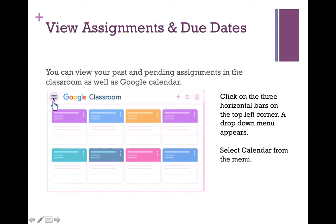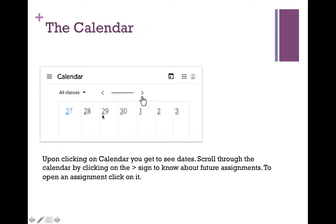You see there are three horizontal bars on the top left corner. Click on it and a drop-down menu will appear — select calendar from that menu. Once you click on calendar, a view will show up. Click the greater than symbol to scroll ahead and see all the assignments due in the near future. Click the less than sign to see past assignments. You can view all classes or click the drop-down arrow to choose a specific subject or class.